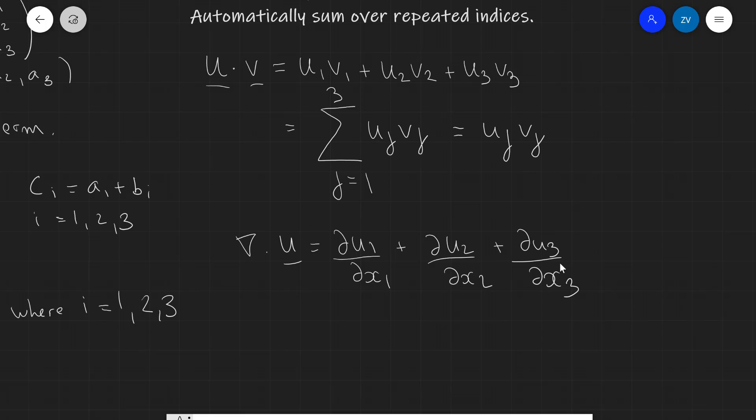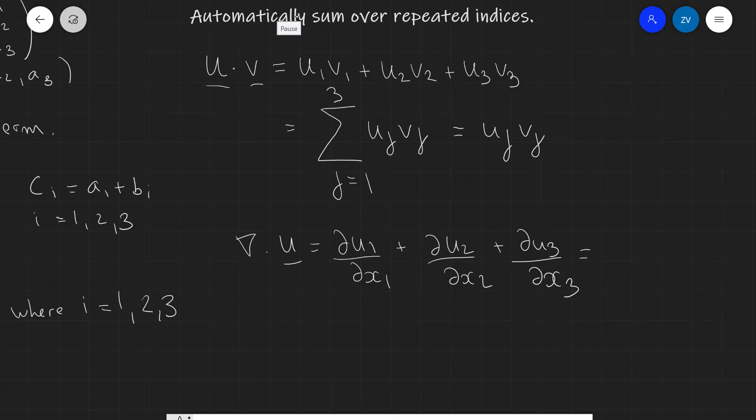Well, we can invoke the summation sign here yet again. And what are we going to write? Let's write this down here underneath. Let's call, in this case, the index to be i just for a difference. So, let's say that i is equal to 1 up to 3. This will be equal to duᵢ/dxᵢ.